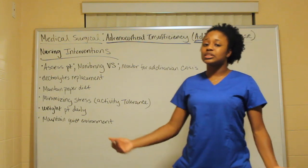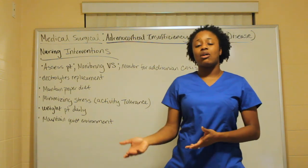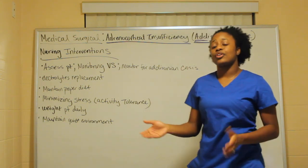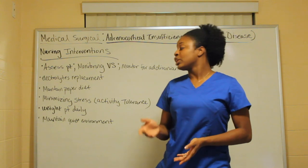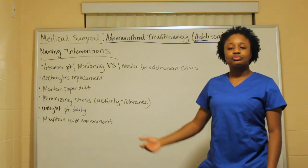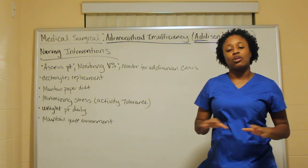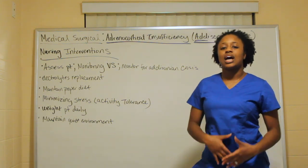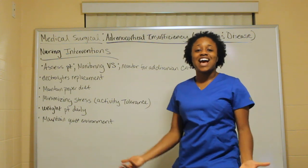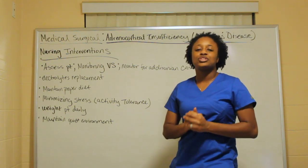Weigh the patient daily, since they have poor appetite and extreme weight loss — monitor if they're gaining or losing weight, and how quickly. Losing three to five pounds a week is a significant difference to watch for. Also maintain a quiet environment to minimize stress, keep patients calm, and support them with family members present.